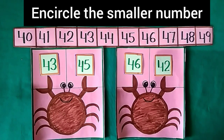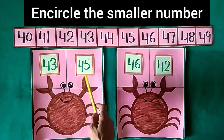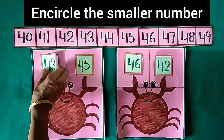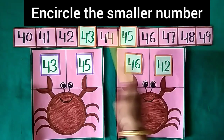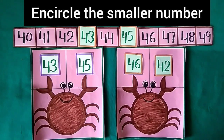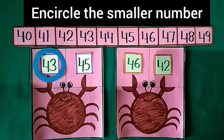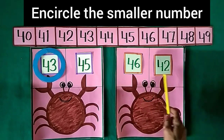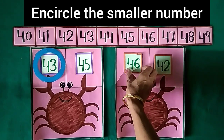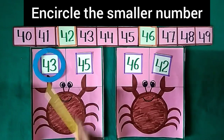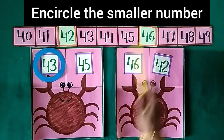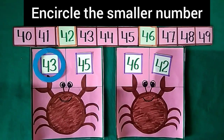Students, now we encircle the smaller number. There are 2 numbers: 43 and 45. The first number is 43 and the next number is 45. Look at the number strip — 43 comes before 45, so 43 is the smaller number. So we encircle it. The next sum: 46 is our first number and 42 is our second number. Look at the number strip — 42 comes before 46, so 42 is the smaller number. So we encircle it.